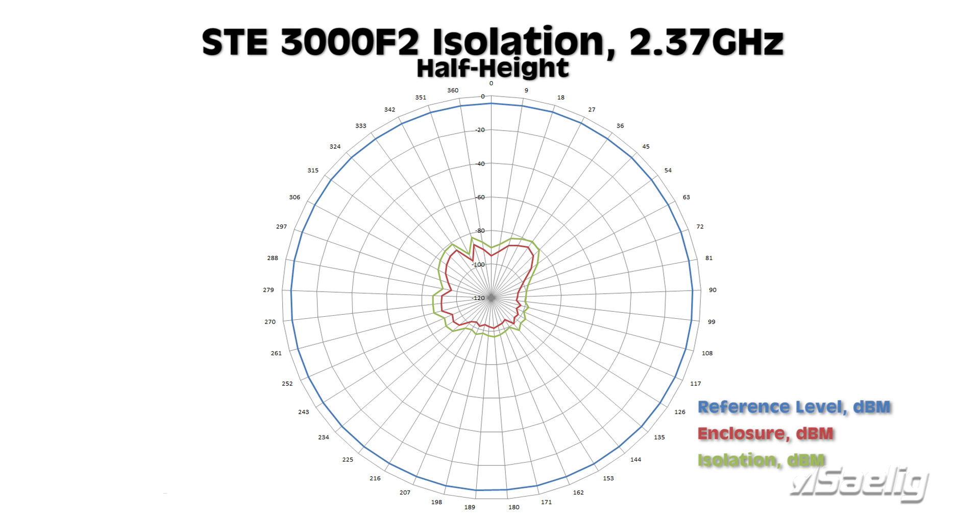Here we have the results of the test shown in polar form. The blue line around the outside is the reference level that we got at the very beginning. And the red line is the results that we got with the transmitter inside the box. So the difference between the two, the green line, is the isolation.